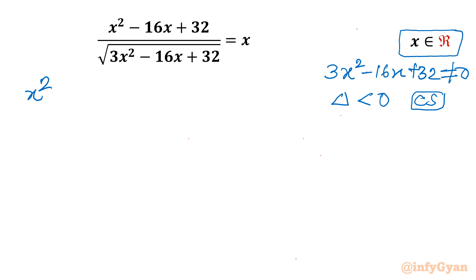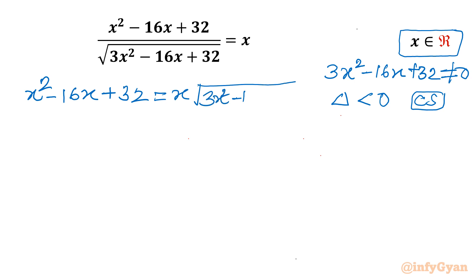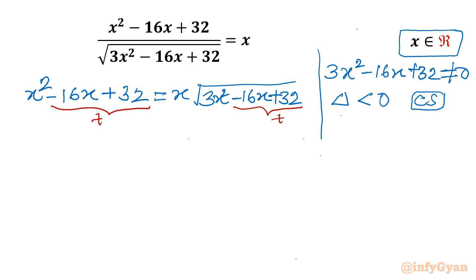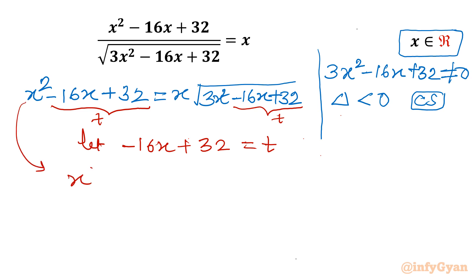After cross multiplying, I will write x² - 16x + 32 on the left, and the right-hand side is x times √(3x² - 16x + 32). Now I will consider a substitution: let -16x + 32 = t. So our equation converts into x² + t = x times √(3x² + t).